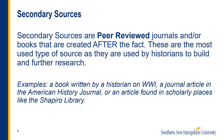Secondary sources, on the other hand, are peer-reviewed journals and/or books that were created after the fact. These sources are peer reviewed by someone who did not experience firsthand or participate in the events or conditions you're researching. They are usually based on a combination of primary sources and may include other secondary sources as supporting data. These are the most used type of sources because they are used by historians to deepen and further research on topics and events. Some key examples are a book written by a historian concerning World War One, a journal article published in the American History Journal, or an article found in the Shapiro Library.